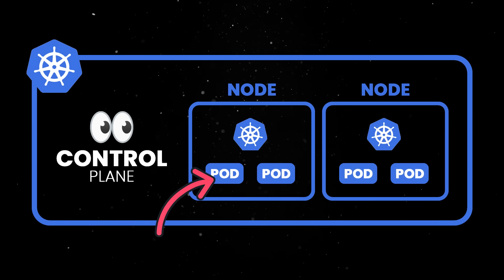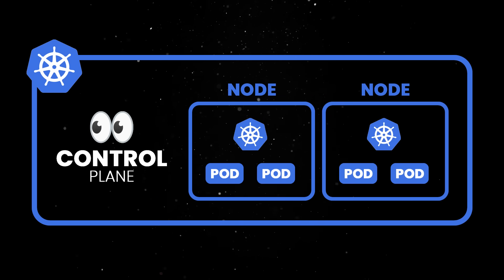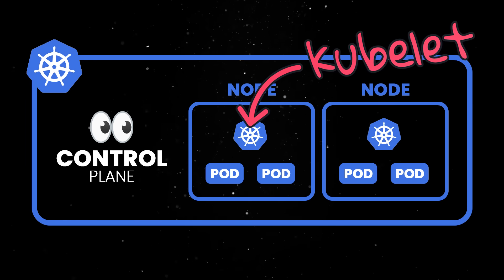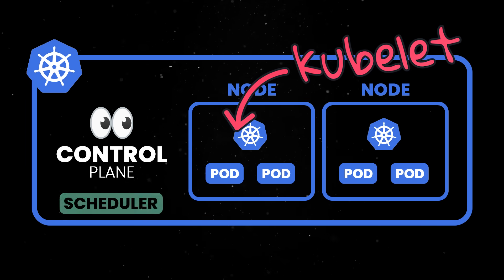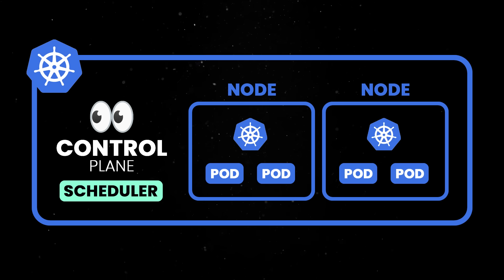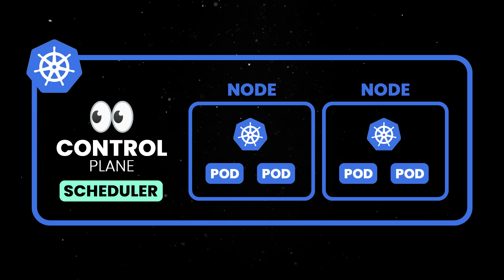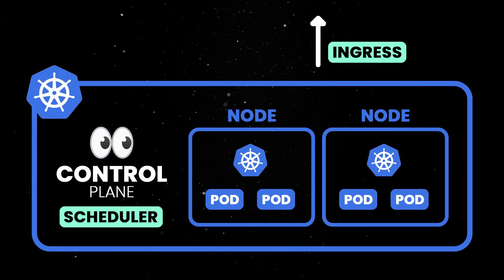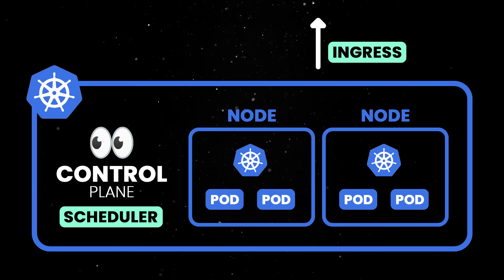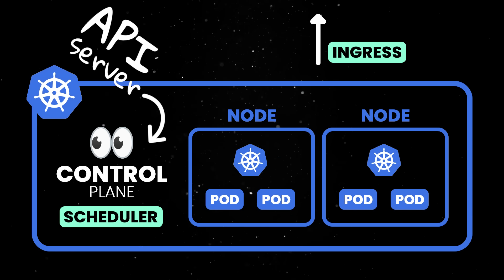Pods are the smallest deployable units and they wrap around one or more containers. Each node in the cluster runs an agent called the kubelet, which ensures that containers are running as specified by the control plane. The scheduler decides where new pods should run based on available CPU, memory, and any node constraints. To expose services to the outside world, you typically use an ingress, which handles external traffic routing. Everything communicates through the API server, which acts as the central hub of the Kubernetes control plane.